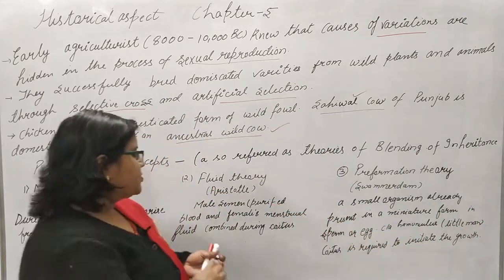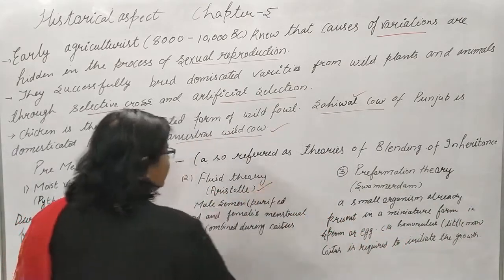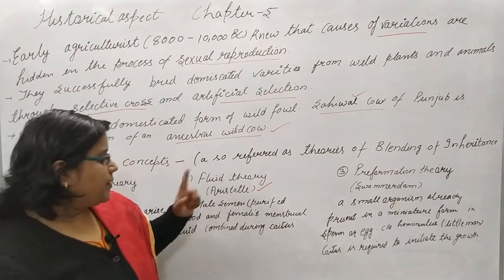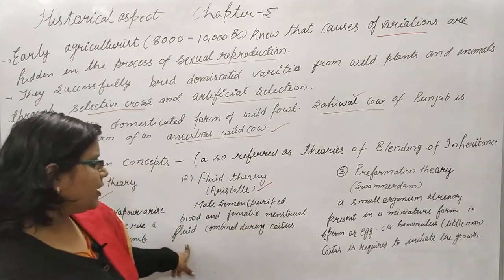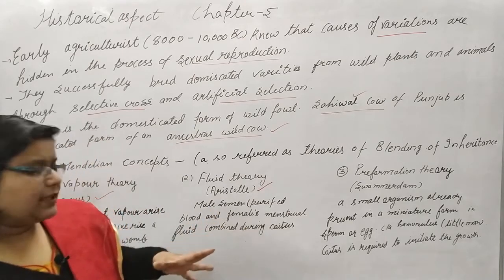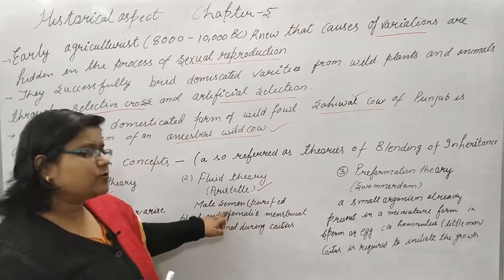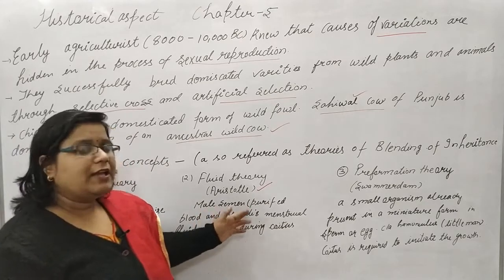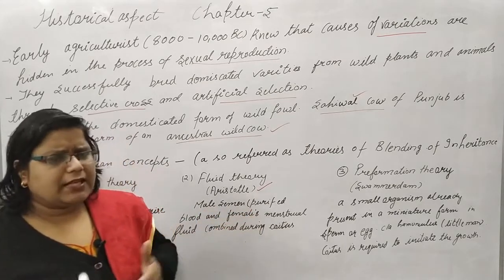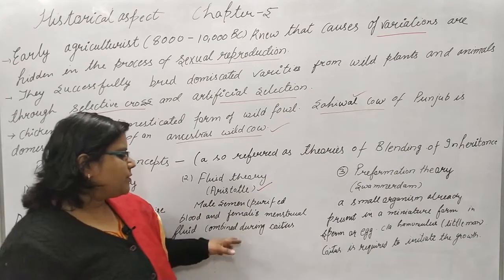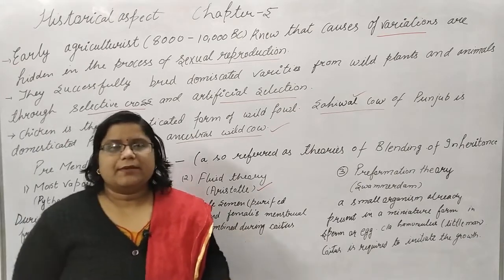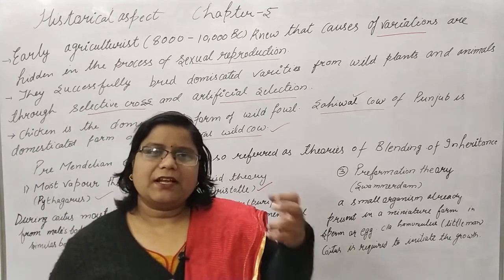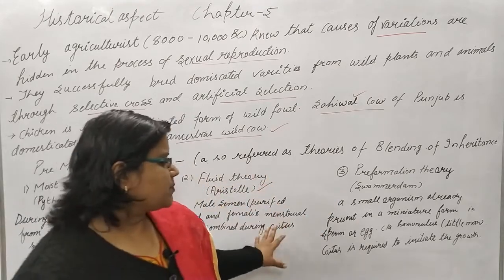The fluid theory was given by Aristotle. He said that male semen is purified blood and the female menstrual fluid is also a fluid form; during coitus these combine and a new living system develops. This is also a wrong theory — we know that semen is not generated from blood but involves sperm structures from glands.